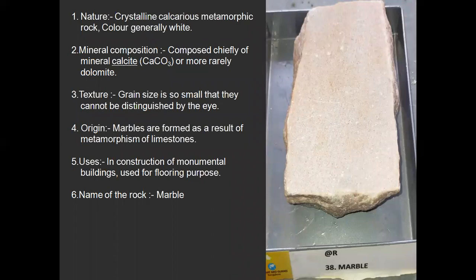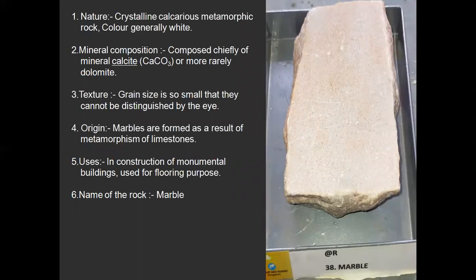Marble. It is a crystalline, calcareous metamorphic rock. It is generally white in color, composed chiefly of the mineral calcite — calcium carbonate (CaCO3) — or more rarely dolomite. Grain size is so small that it cannot be distinguished by the eye. Marbles are formed as a result of metamorphism of limestone. It is used in construction of monuments, modeling, flooring, etc. The Taj Mahal is constructed from marble.